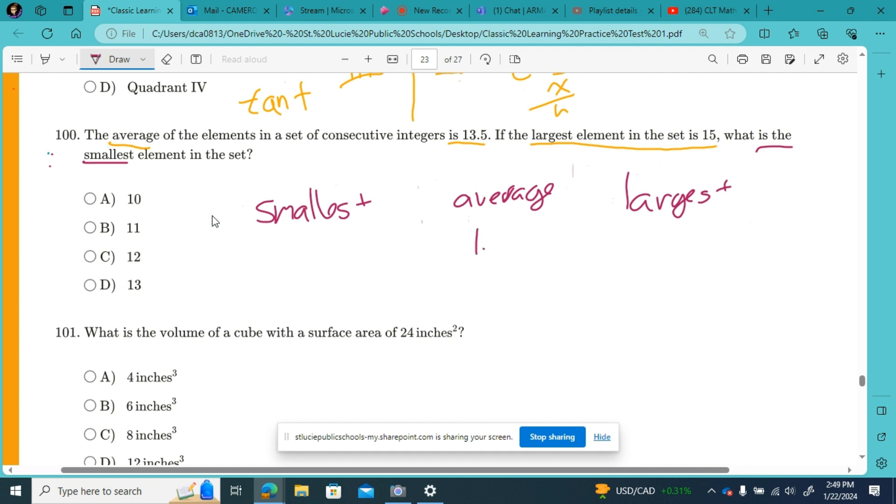Average is 13.5, largest is 15, they want to know what's the smallest. And consecutive integers just means numbers in a row. So to go from 13.5 to 15, you're moving up 13.5 to 14.5, you went up one and then up another half. So our smallest would have to be, out of these answer choices, 12, because 12 plus 1.5 would give us that 13.5.